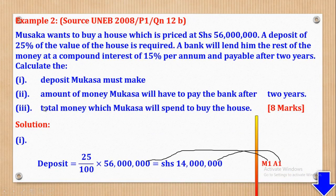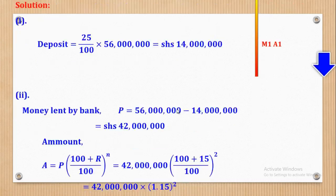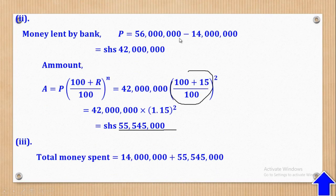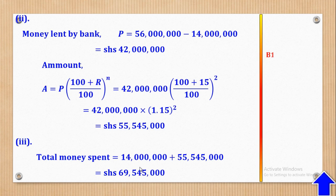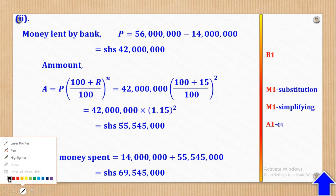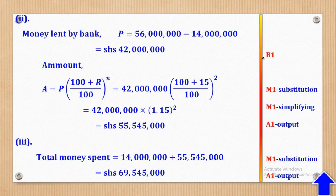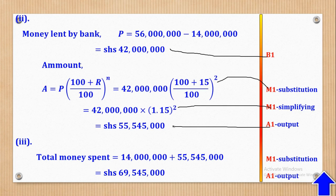For Roman numeral 3, the total money Mkasa will spend to buy the house is the deposit plus the amount paid to the bank: 14,000,000 plus 55,545,000 equals shillings 69,545,000. For marking: B1 for getting the principal, M1 for substitution, M1 for simplifying, A1 for the amount output, M1 for addition substitution, and A1 for the total output.